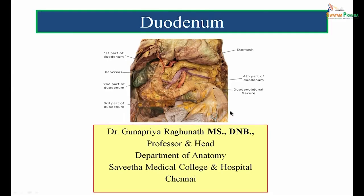Duodenum is the most proximal part of the small intestine, as you can make out here. In this cadaver specimen, this is the duodenum. The duodenum is receiving the acidic contents from the stomach, and from the duodenum the partially digested food material is passed on further into the jejunum, the next part of the small intestine.